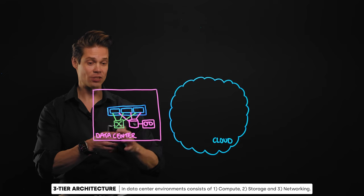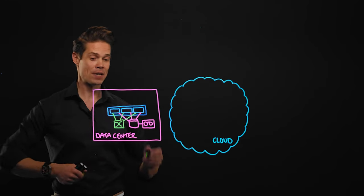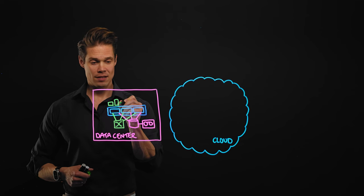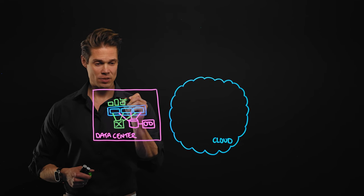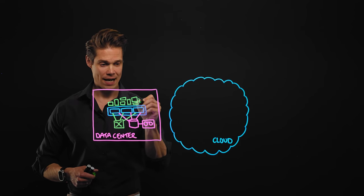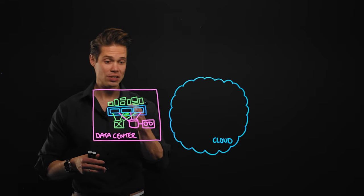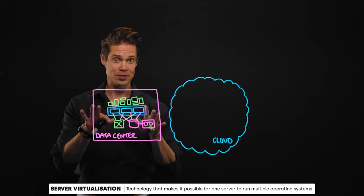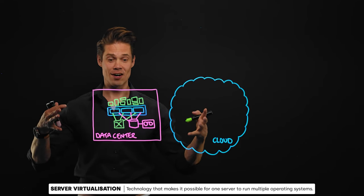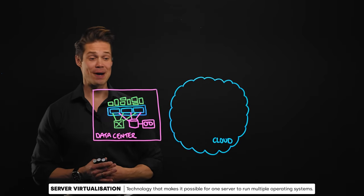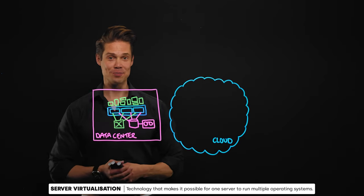Now that we have this three-tier construct — compute, storage, networking — in place, we can start installing a ton of operating systems in this compute environment. We can actually install more operating systems than we have servers. We only have three servers here, but through the magic of something called server virtualization, we can install multiple operating systems on one server. That's truly magical, but we'll get back to that in later modules.